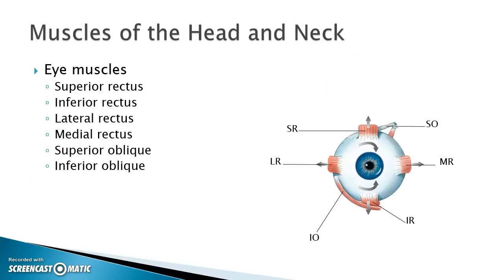This slide shows the extrinsic eye muscles, which are responsible for moving the eye up, down, right, left, and rolling the eyes. We have superior rectus, inferior rectus, lateral rectus, medial rectus, and superior and inferior oblique. The word rectus means straight and oblique means at an angle.